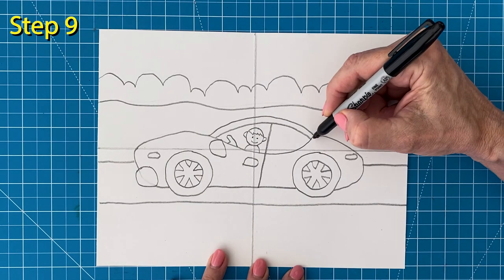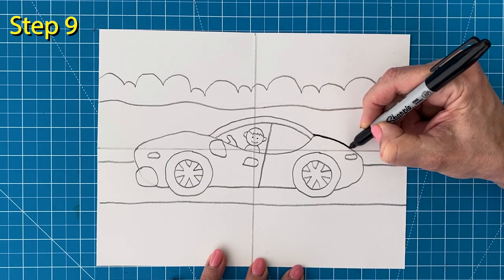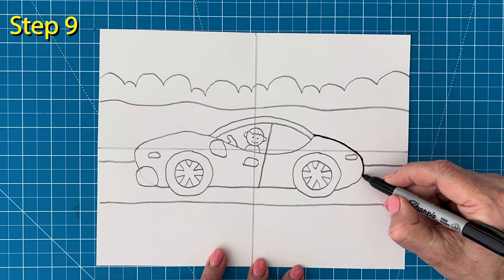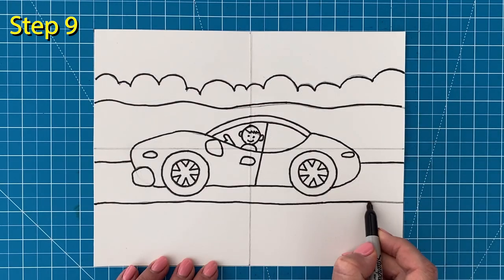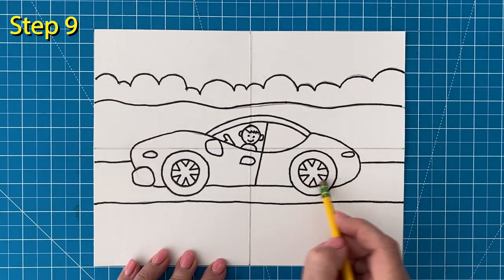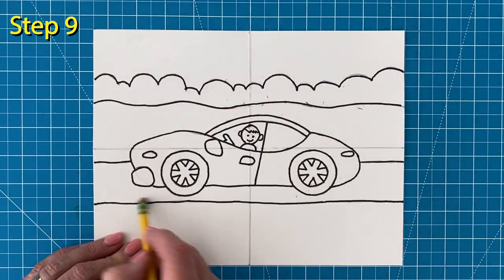Step number nine. The drawing is done, so it's time to trace. Use your black marker to slowly go over those pencil lines. When you're done, it's good to check for any pencil lines that you might want to still erase.